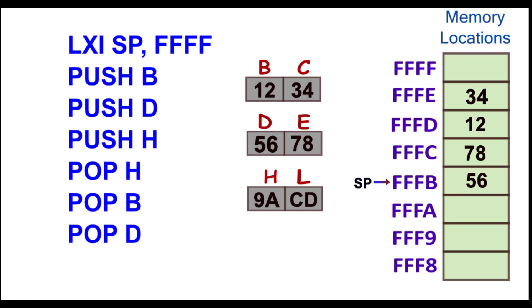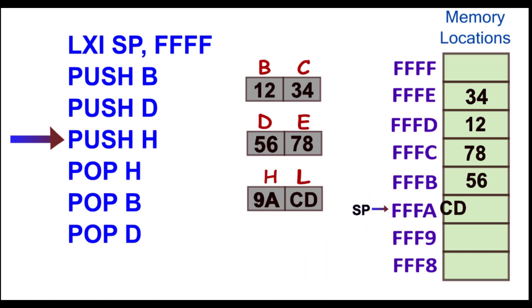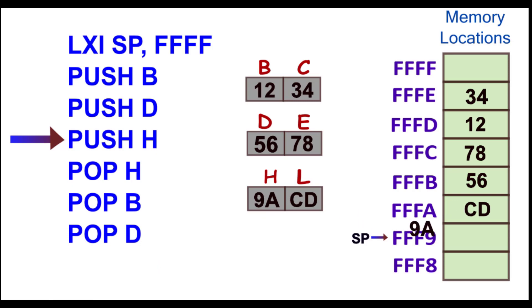With PUSH H, when this instruction is executed the stack pointer first decrements, the contents of L are stored, it decrements again, and the contents of H are stored. That covers all three PUSH instructions.